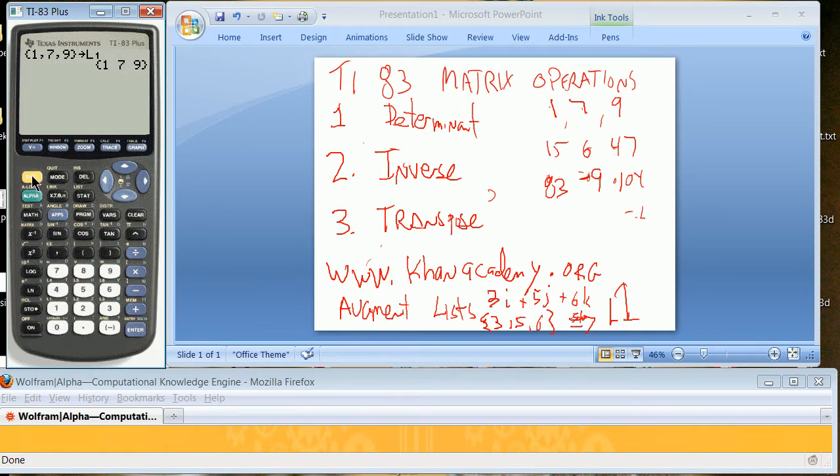Put that into list 1, and now I am going to do open squiggles, 15, go back here, 15, 6, 47, 2nd, close squiggles, stow it into 2nd list 2. And then finally, 3rd one, 2nd squiggles, 83, comma, minus 9. Remember, you have to use the minus here in a calculator, you can't use the subtract, comma, 104. Close squiggles.